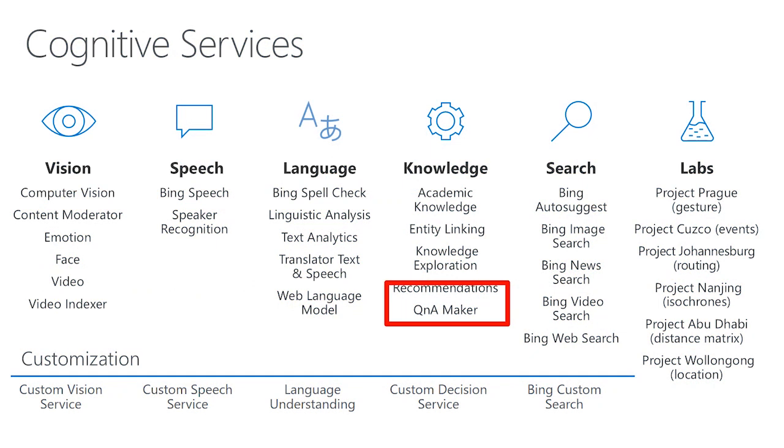The Cognitive Services are grouped into six categories: vision, speech, language, knowledge, search, and labs.